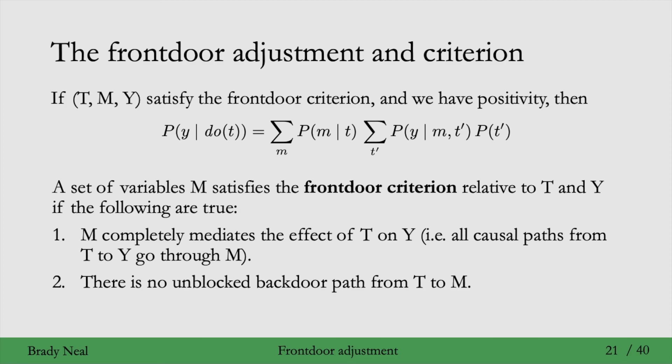2. There is no unblocked backdoor path from T to M. This was key in step one. And 3. All backdoor paths from M to Y are blocked by T. This was key in step two.